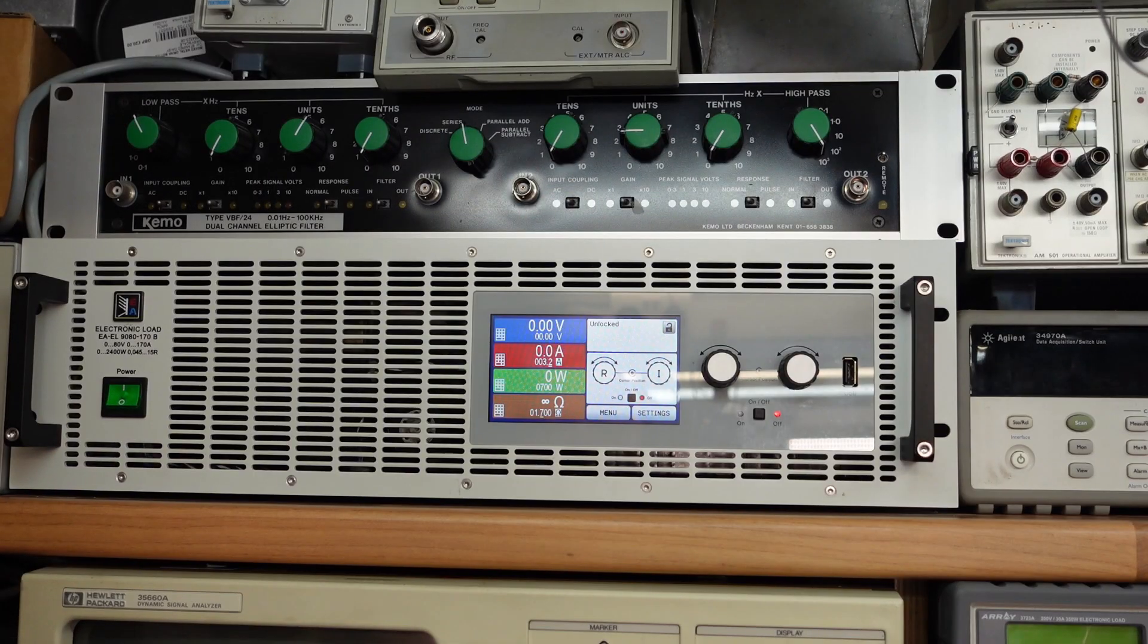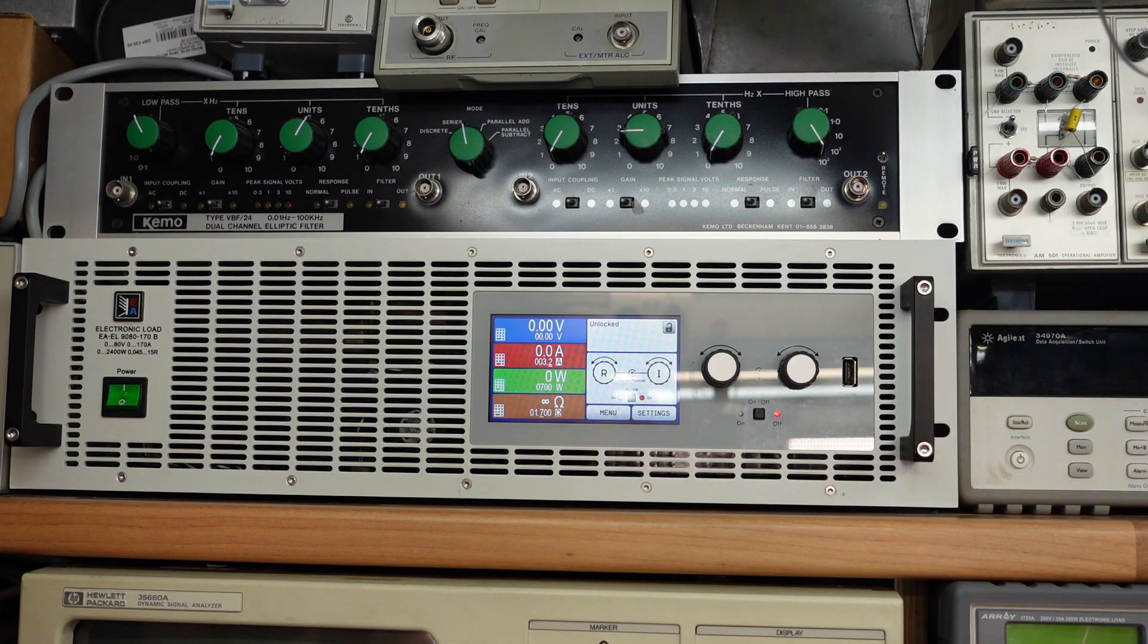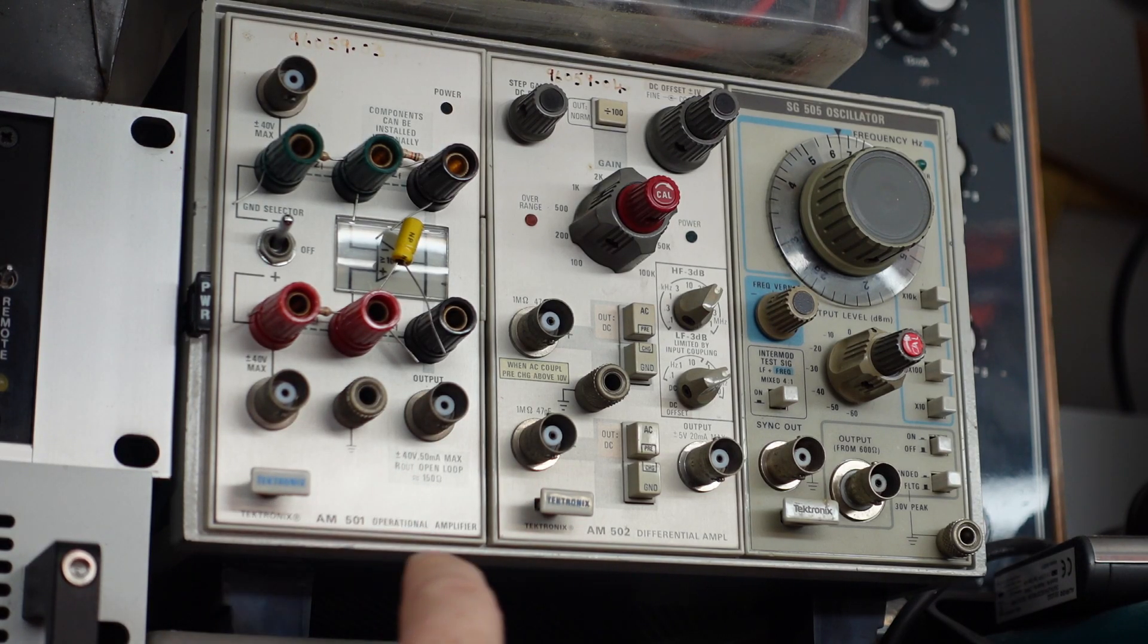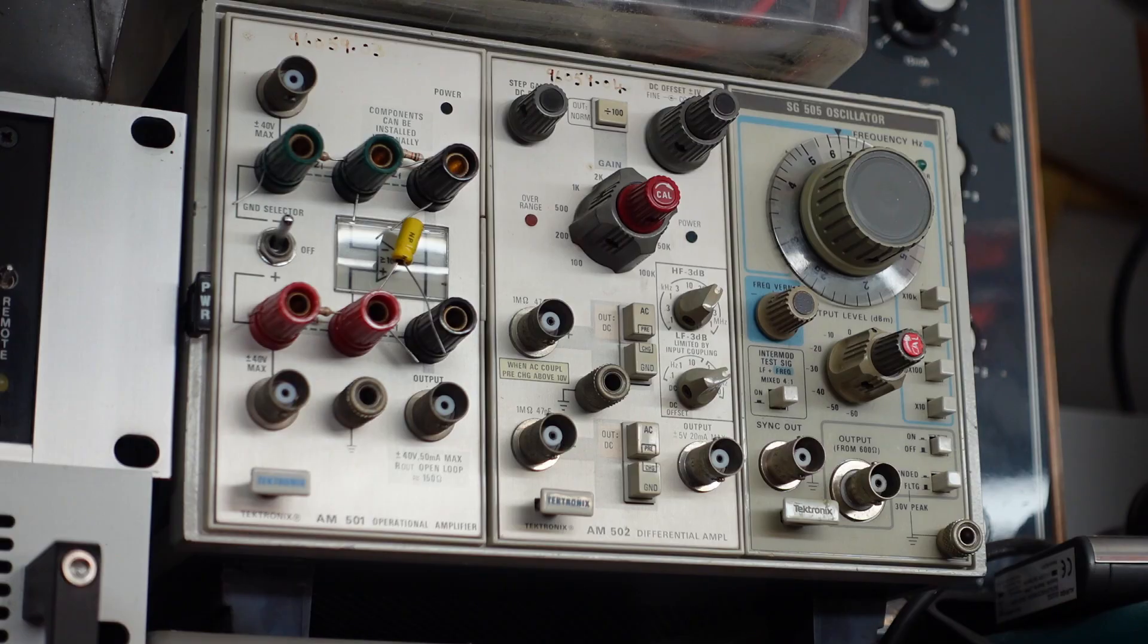And sitting above it is a dual channel elliptical filter. These aren't very common I don't think, but these are great when you're working on circuits that need a bit of filtering and you don't know where to start. This is occasionally useful—this is basically an op amp in a box. It's a Tektronix AM501. It's got a good range to it.